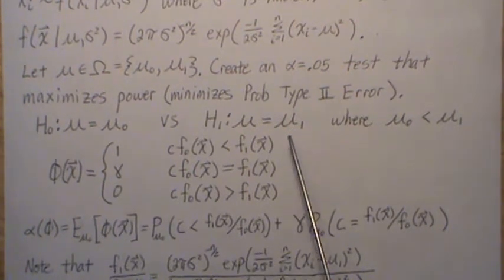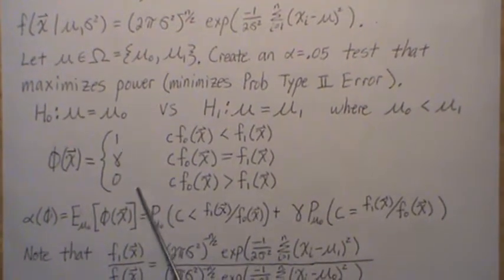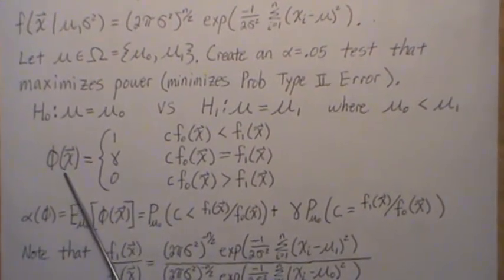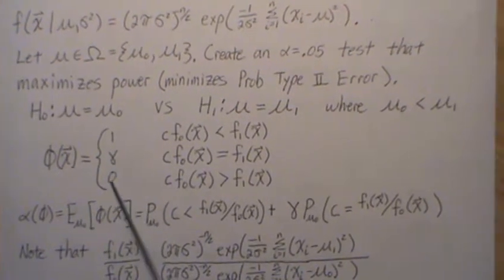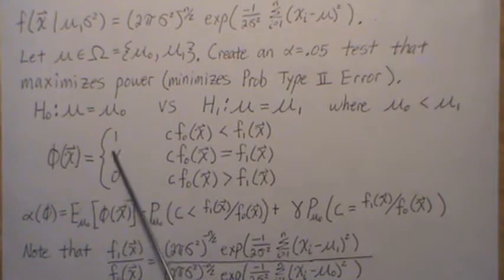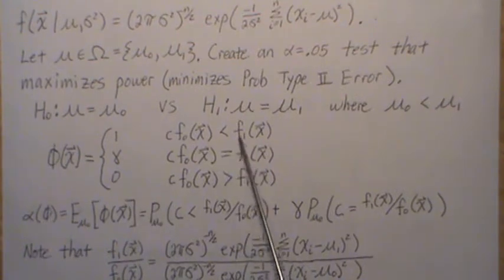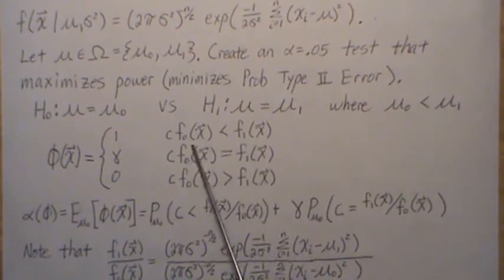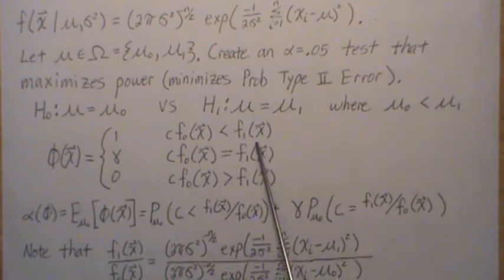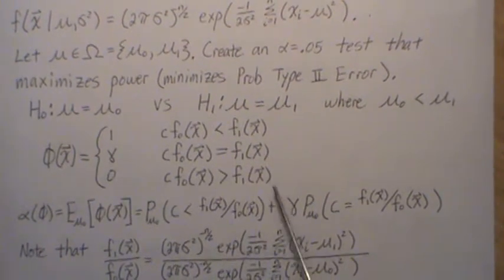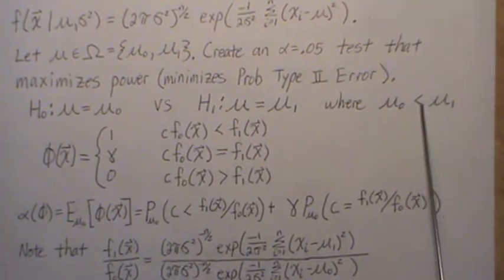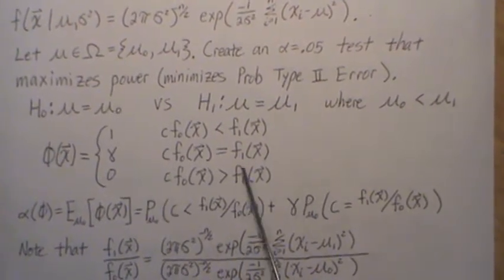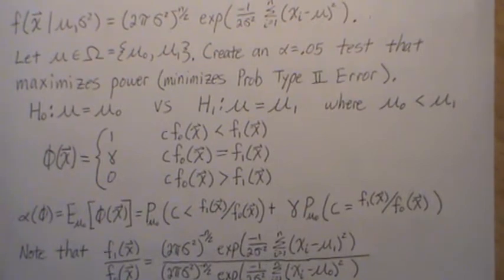The Neyman-Pearson lemma tells us that if we set up the hypothesis this way, our test function phi takes values 1, gamma, or 0. If phi equals 1 we reject; if it's 0 we do not reject the null; if it's gamma we reject the null hypothesis with probability gamma. We set up the linear combination with the inequality going this way and that way and equals. Note that which hypothesis has the larger mu is irrelevant in this Neyman-Pearson setting.